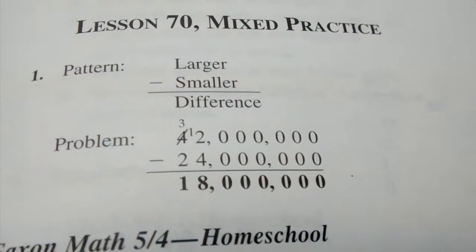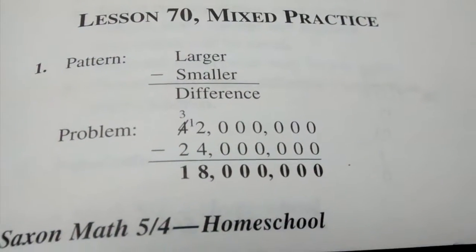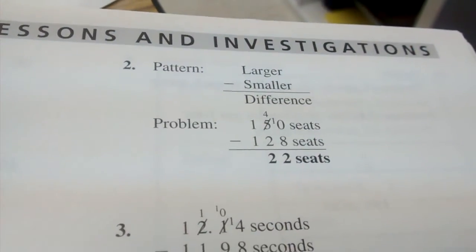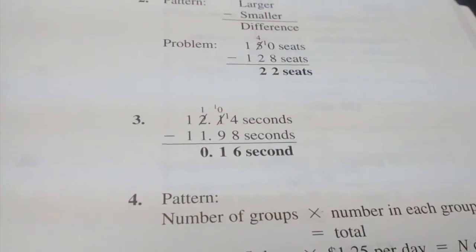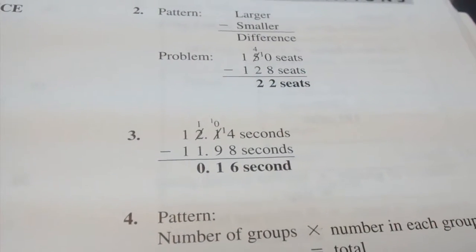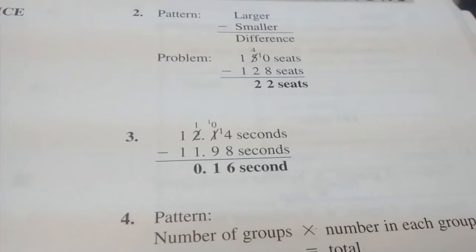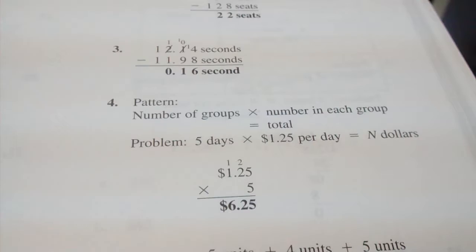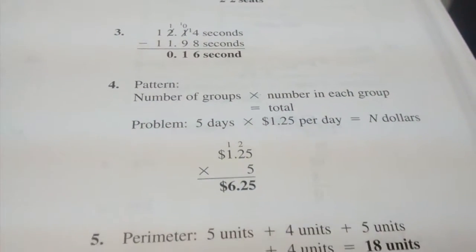Lesson 70. Number 1, 18 million. Number 2, 22 seats. Number 3, 16 hundredths of a second. Number 4, $6.25.